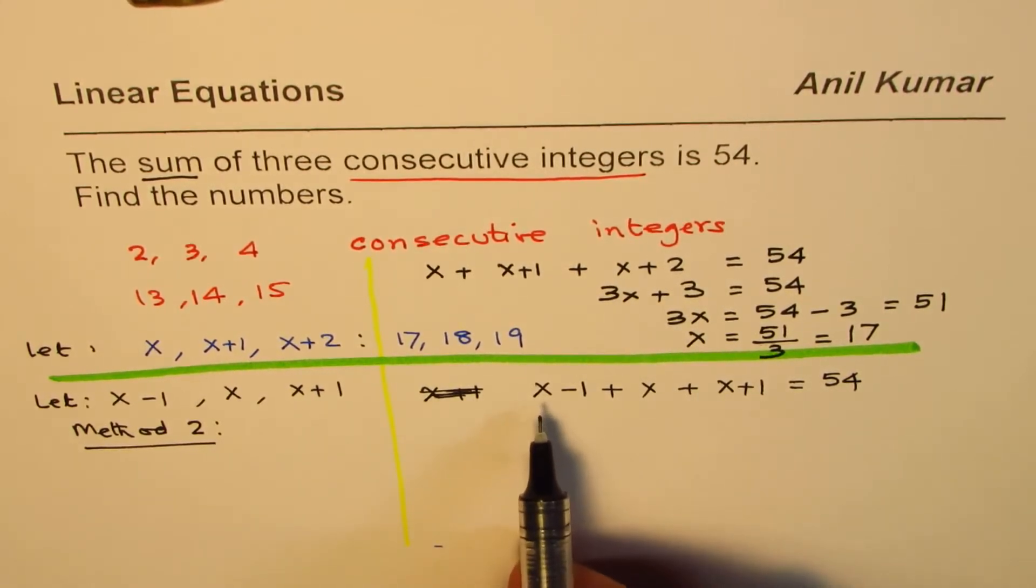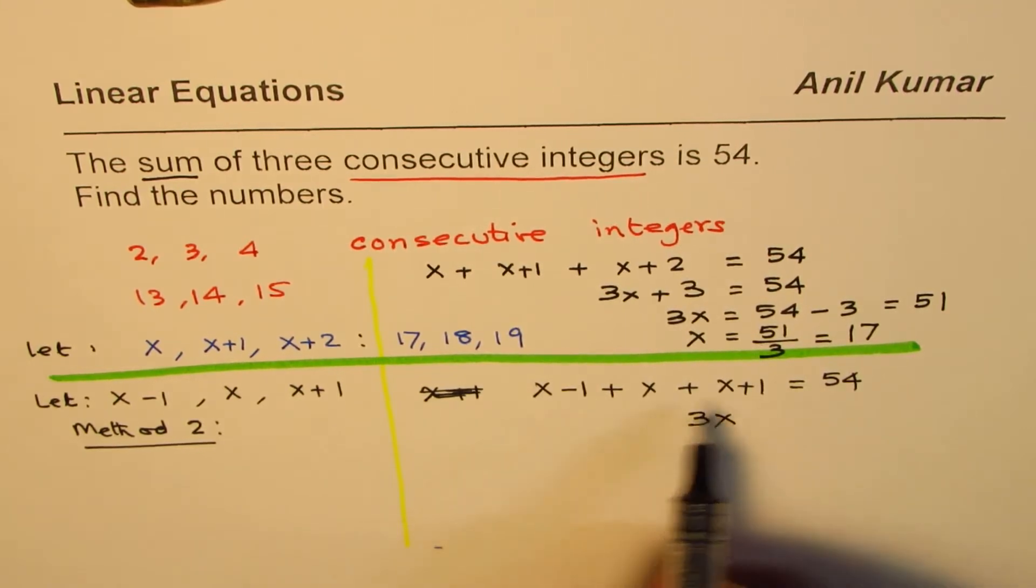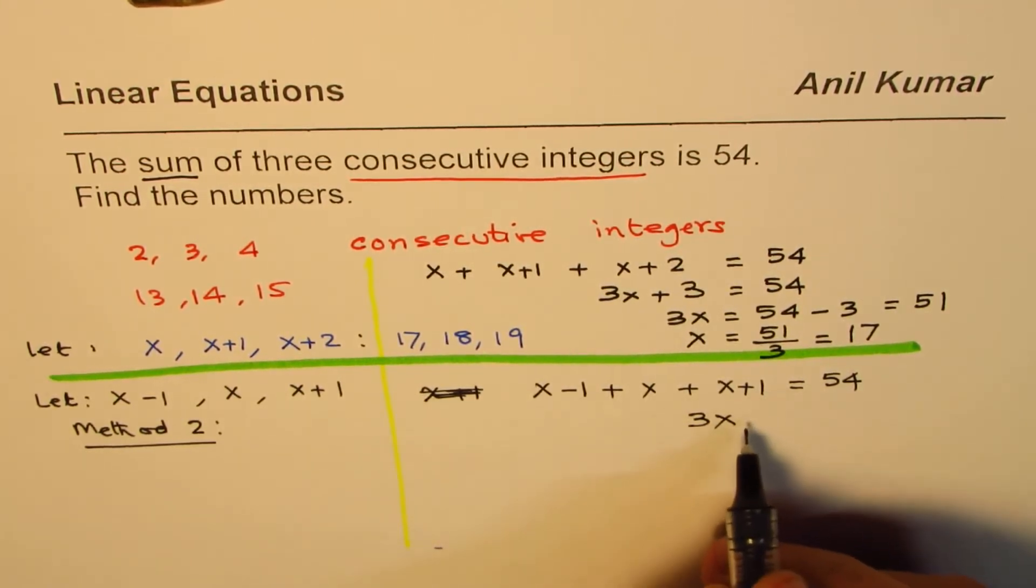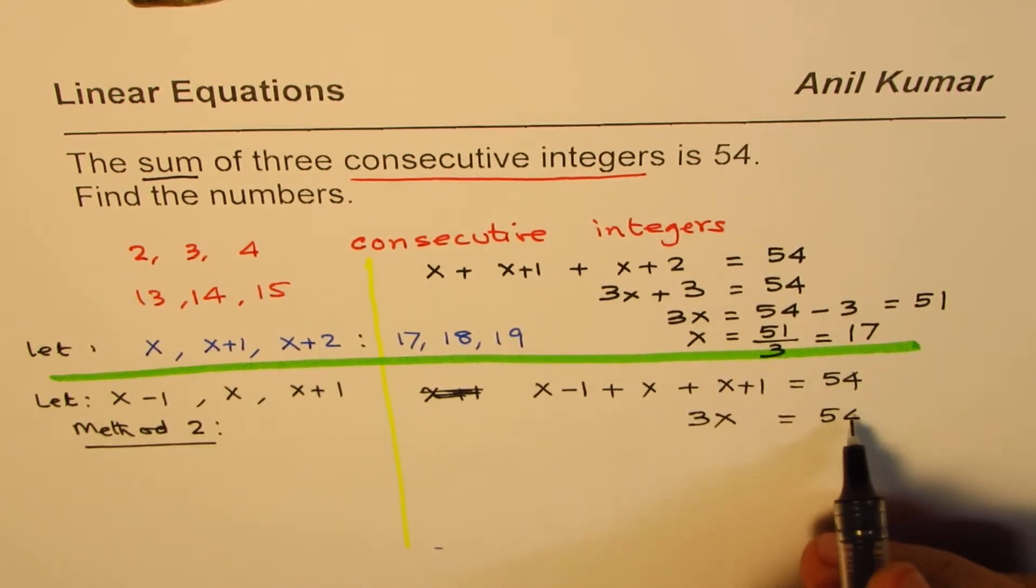So, this time, what do we have? We have 3x as before. But see what happens to the numbers. Minus 1 plus 1 is 0. So, we straight away get 3x equals to 54.